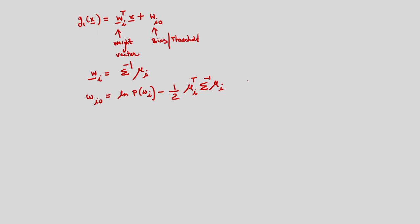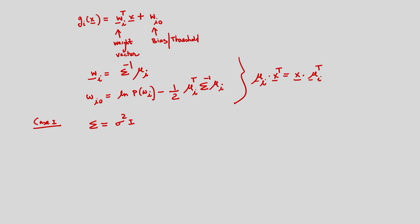We have determined this expression. In the last class, we considered mu_i dot x^T equals x dot mu_i^T. This is the expression for the discriminant function. Case number 1 is the diagonal covariance matrix, same for all classes, and corresponding to this the weight vector is the difference between the means of the two classes.